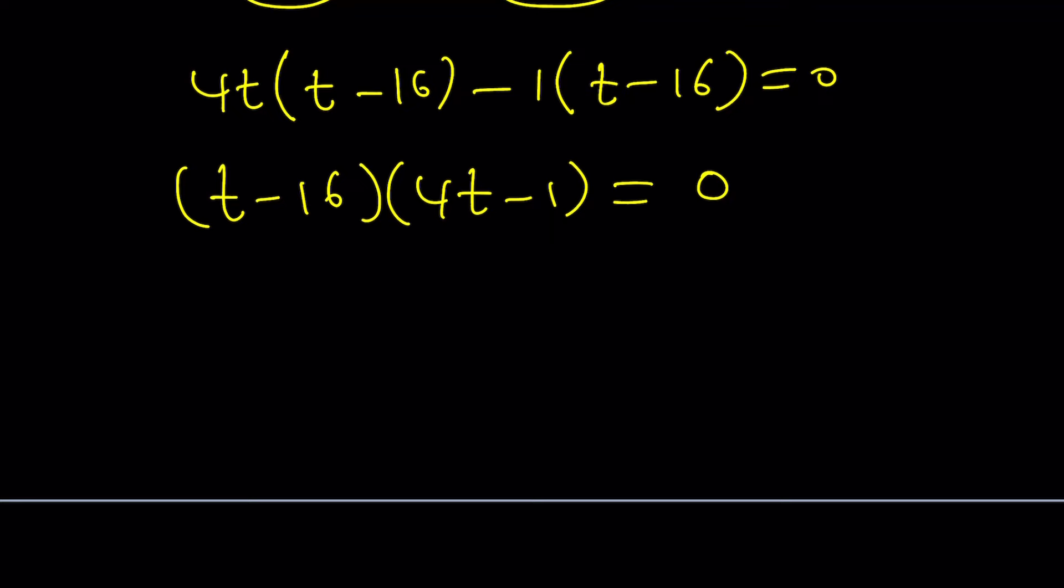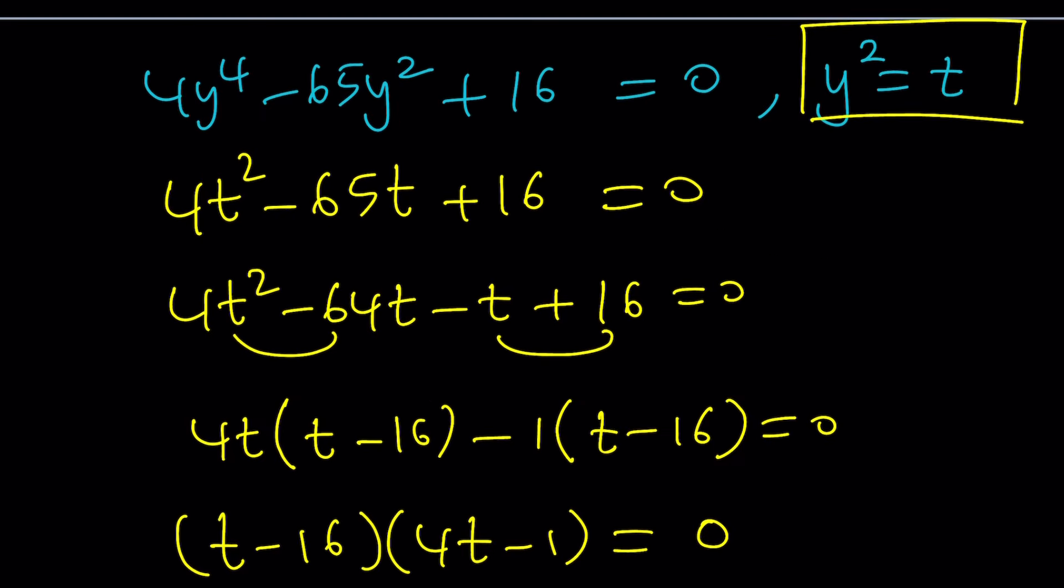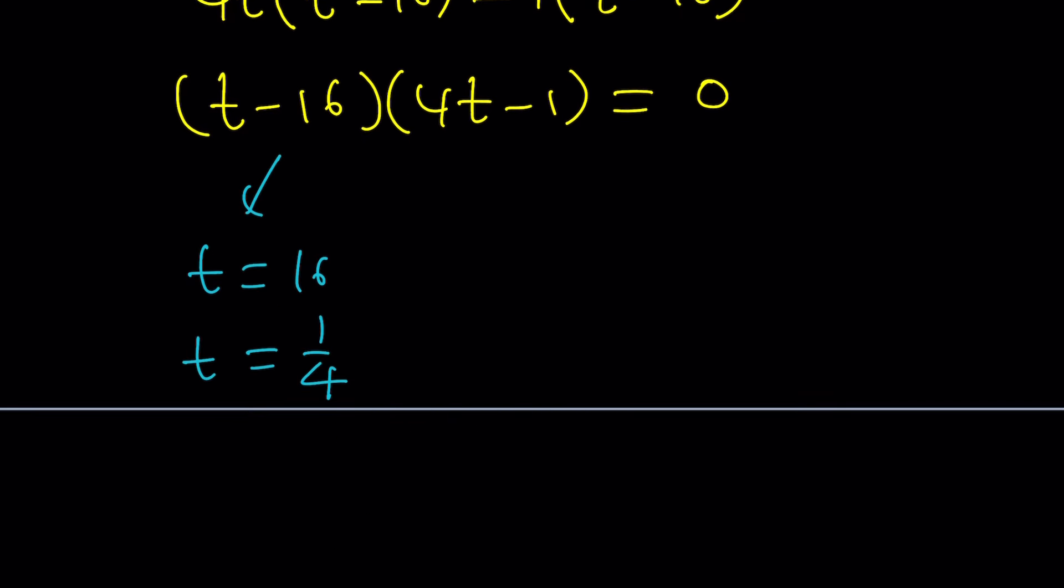Great. From here, we get the following solutions. t equals 16 and t equals 1 fourth. But t is y squared. Let's go ahead and set t equal to y squared. And from here, we get two values because if y squared is equal to 16, y is going to be 4 and negative 4.